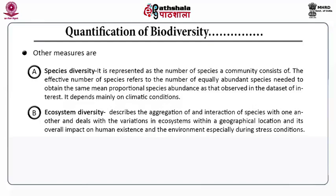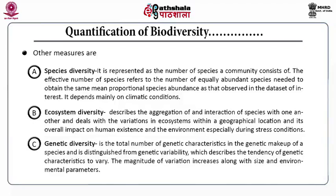Thereafter, coming to ecosystem diversity. This describes the aggregation as well as the interaction of species with each other, and deals with the variation in ecosystem within a geographical location and its overall impact on human existence and the environment, especially during stress conditions. Next is genetic diversity. Genetic diversity is the sum total of the genetic characteristics in the genetic makeup of a species, and is distinguished from genetic variability, which describes the tendency of genetic characteristics to vary. The magnitude of the variation increases along with the size and other environmental parameters.